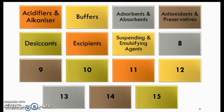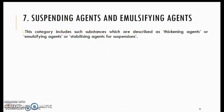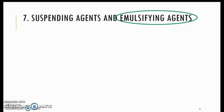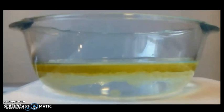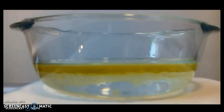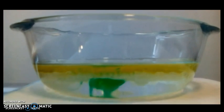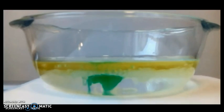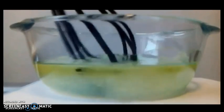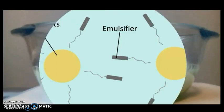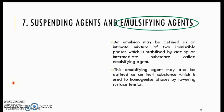Next is suspending and emulsifying agents, also called thickening agents, emulsifying agents, or stabilizing agents. Emulsifying agents are used to mix two immiscible liquids — for example, oil and water. When an emulsifying agent is added, the two liquids are able to mix and stay in a homogenized phase.